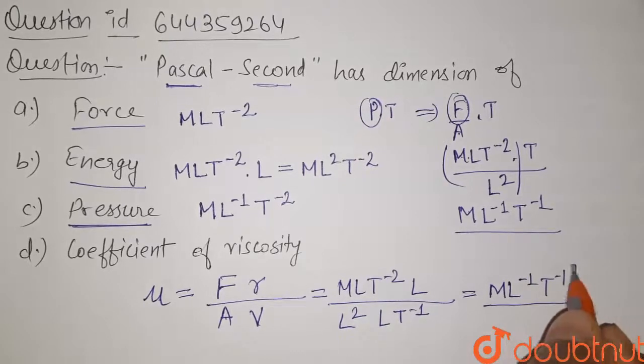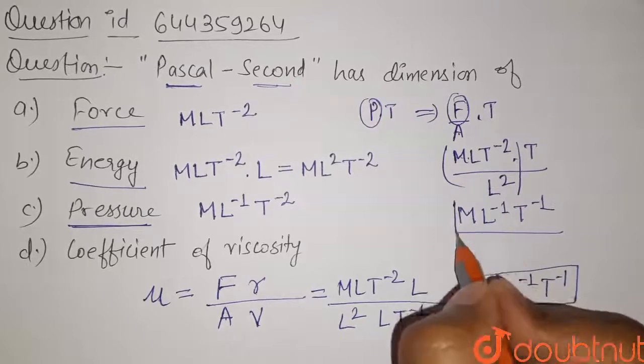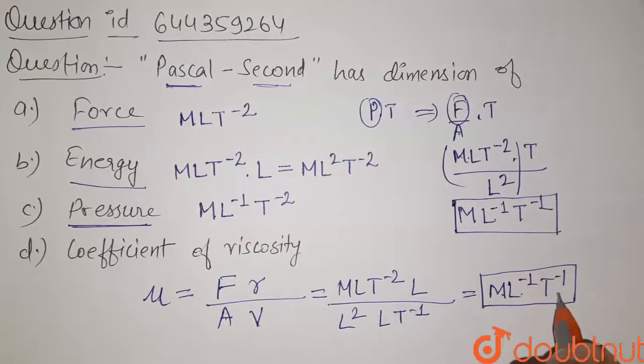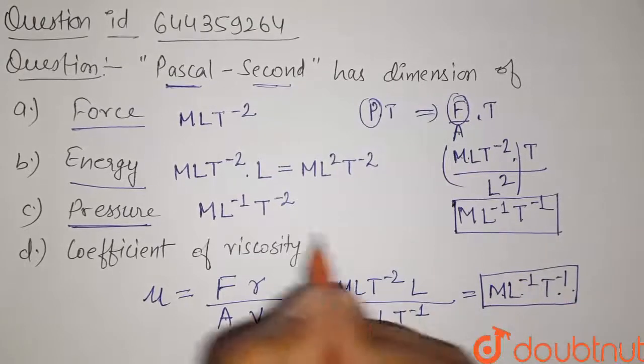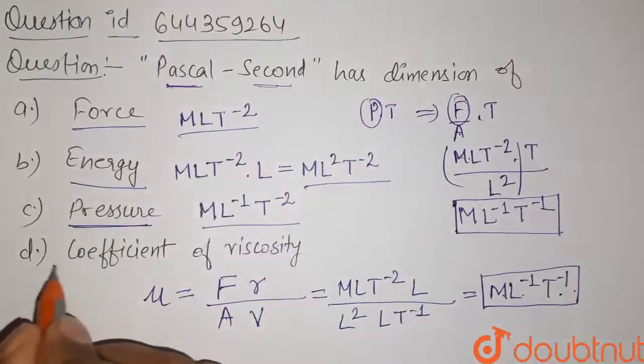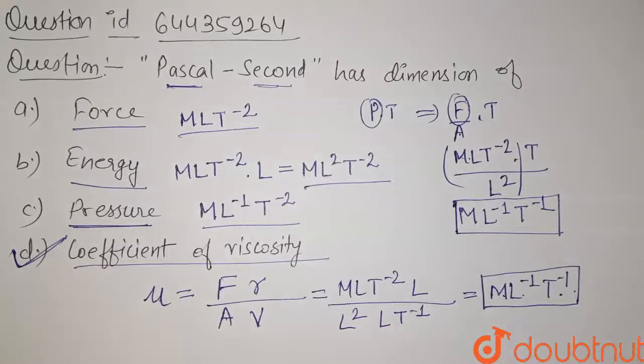Now this is the dimension for coefficient of viscosity and we can see that Pascal-second has the same dimension as that of coefficient of viscosity and all others have different dimensions. So here option D, coefficient of viscosity will be our right answer for this question. Thank you.